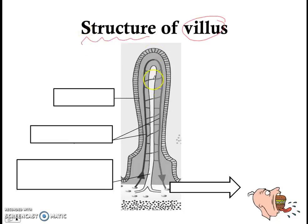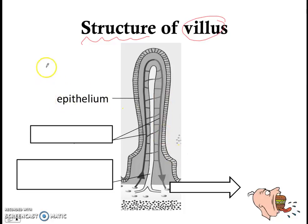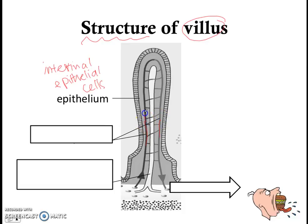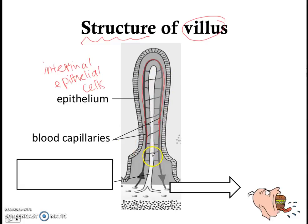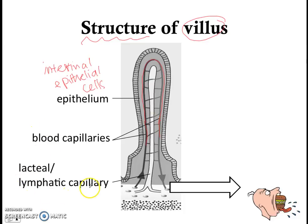What is the structure of the villus? You see this outer layer of cells — we call this the epithelium. It is made out of many intestinal epithelial cells. Now on the inside, these structures here are the blood capillaries. So inside the villus there is a network of blood capillaries. There's also this inner structure in the middle, and that's called the lacteal, or the lymphatic capillaries.